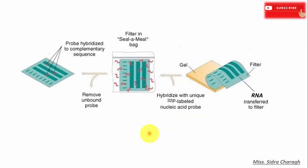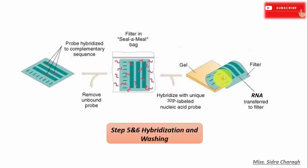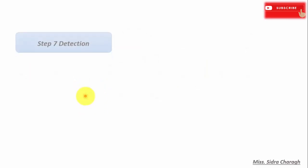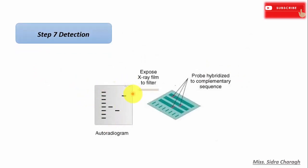After RNA blotting, the next step is hybridization and washing. For detection of RNA molecules on the nylon membrane, we need a probe that will bind specifically to its target RNA molecules. The probe can be a complementary labeled RNA sequence or a labeled complementary DNA sequence. When the nylon membrane is incubated with these probe molecules, the probe will bind specifically to complementary target RNA molecules, and the unbound probes are removed by washing.